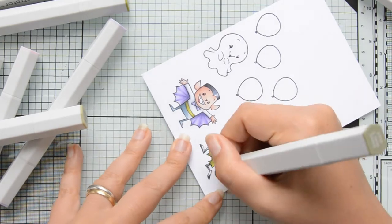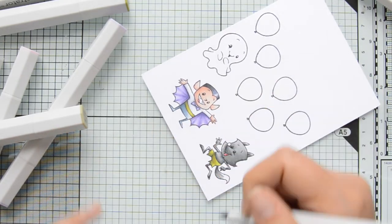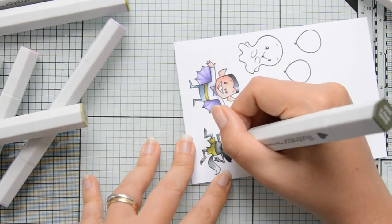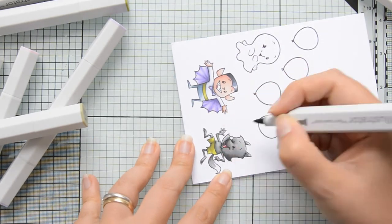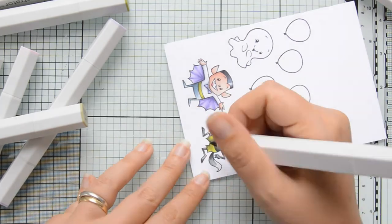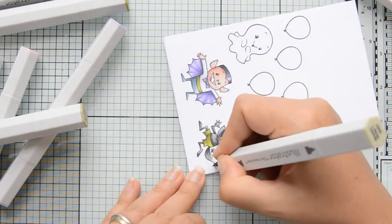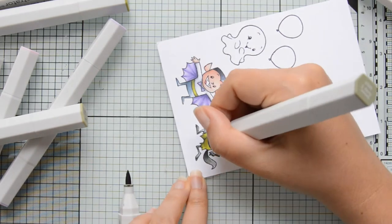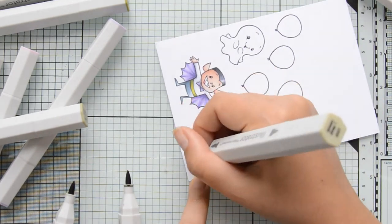But I shaded his fur as if the light was coming from the top left of the screen. This will not matter too much on the final result because I will have the vampire on the left of the card and the werewolf on the right of the card.